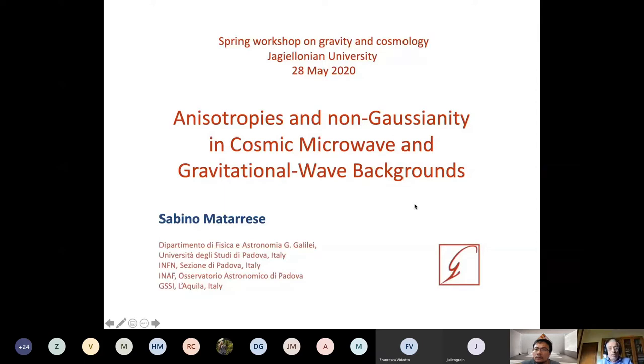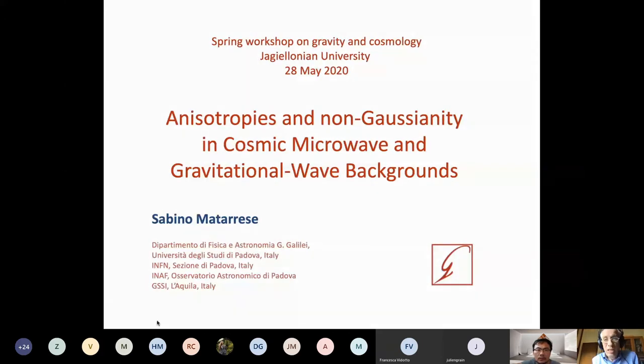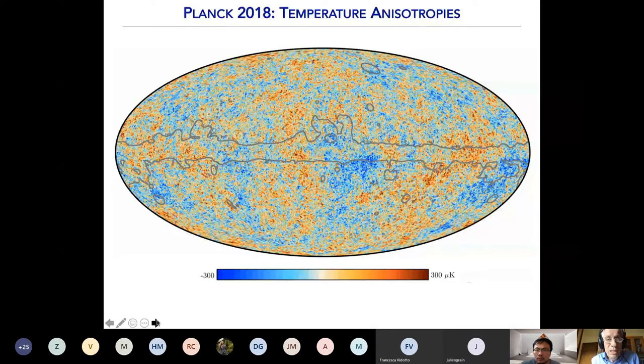Let me start by showing you a very popular map of CMB anisotropies. This is the temperature map obtained by Planck that is the last release which is formally called 2018 even though we released it in 2019 and the papers will likely appear in a few more months, so in 2020.